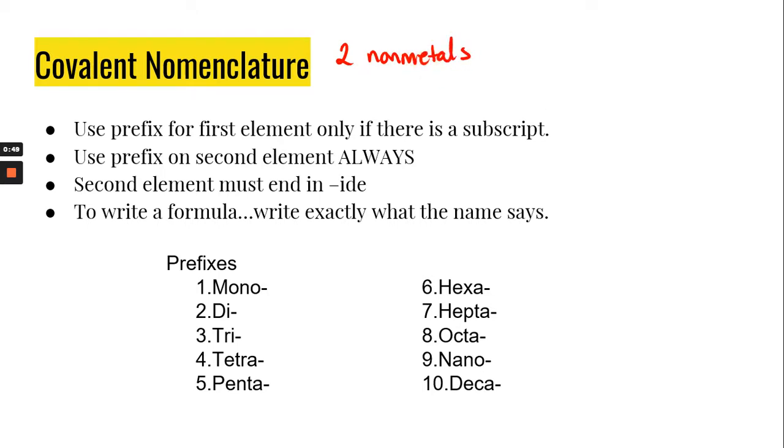So you have two things to the right of the stair step. You use prefixes to indicate how many of each atom there are in the formula. You only use a prefix on the first element if there is a subscript.